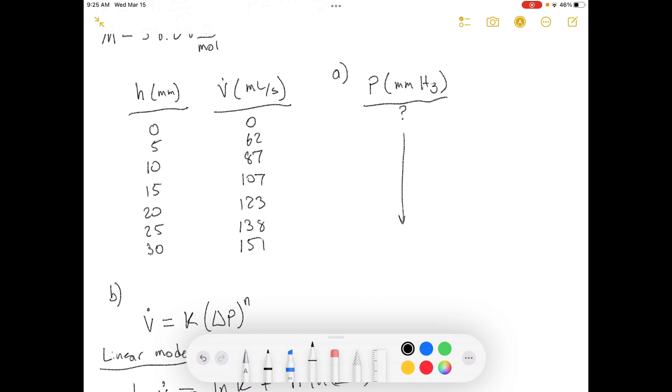Part A: for each of the given readings, calculate the pressure drop across the orifice, delta P, in millimeters of mercury.